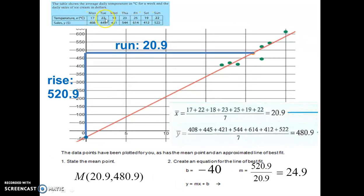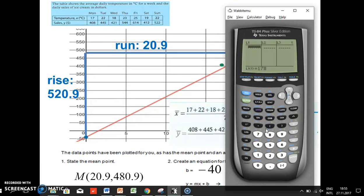So our X values are temperature. I'm going to enter those: 17, enter. 22, enter. 22, enter. 18, enter. 23, enter. 25, enter. 19, enter. 22, enter. So I have my List 1, which is my X values, my temperature values. Now I'm going to go to List 2 and enter my dependent variable, the sales of ice cream. Beginning with 408, enter. 445, enter. 421, enter. 544, enter. 614, enter. 412, enter. 522, enter. Alright, enter the two lists.